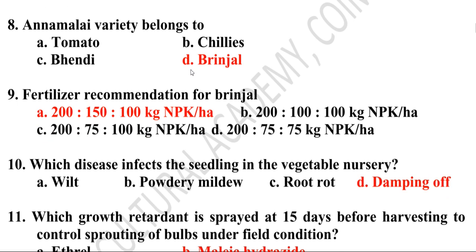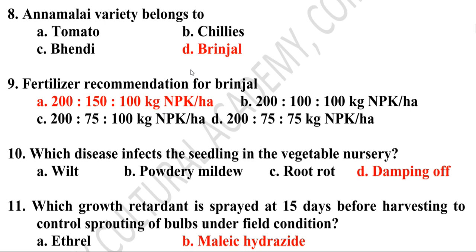Eighth question: Anomaly variety belongs to — tomato, chili, bhendi, or brinjal? Anomaly variety belongs to brinjal and is a wilt-resistant one. Ninth question: Fertilizer recommendation for brinjal is 200:150:100 kg of NPK per hectare.